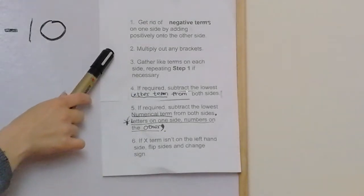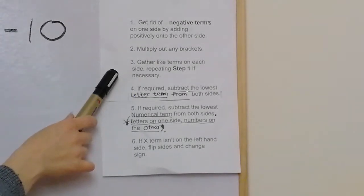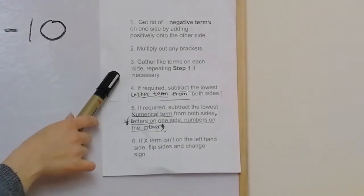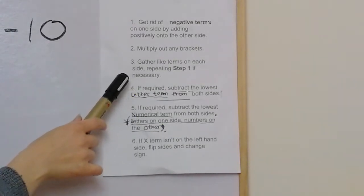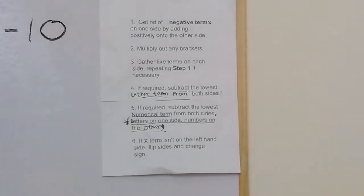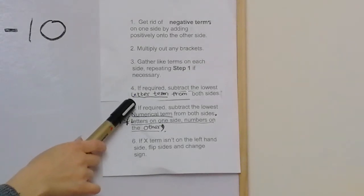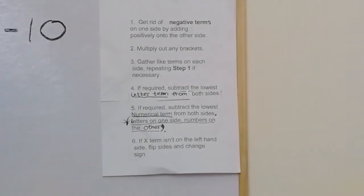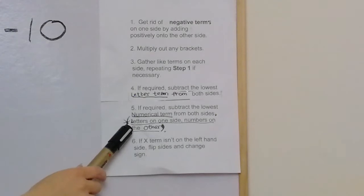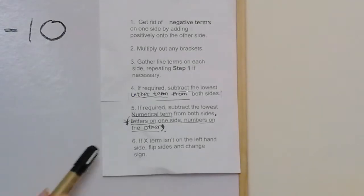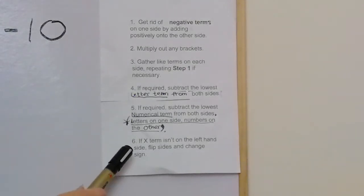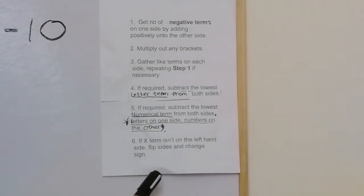The next thing we do is multiply out any brackets. The third thing we do is gather like terms on each side, repeating step one if necessary — so if we have any more negative terms, we can repeat that and get rid of them. Step four is, if required, subtract the lowest letter term from both sides. Step five is subtract the lowest numerical term from both sides, making sure we have letters on one side and numbers on the other. Step six, which only applies in inequalities: if the x term isn't on the left hand side, we flip the sides and change the sign.